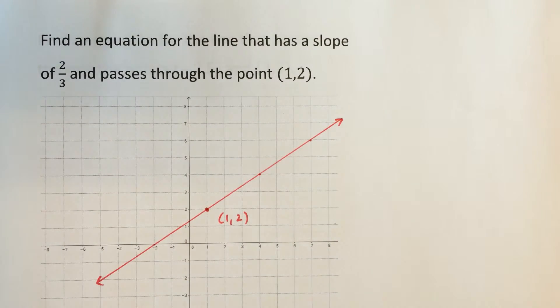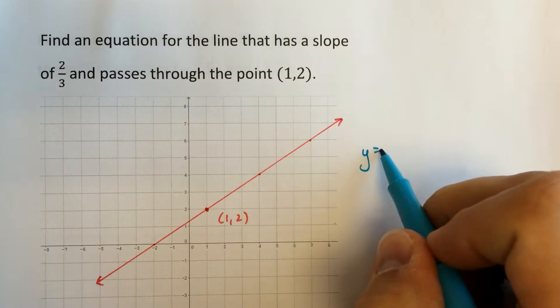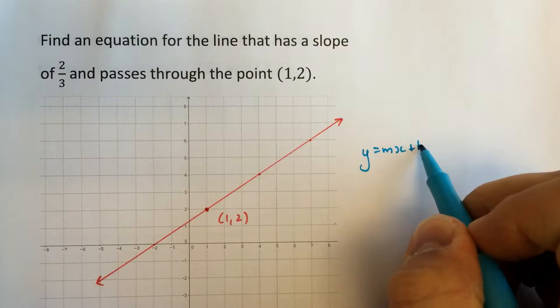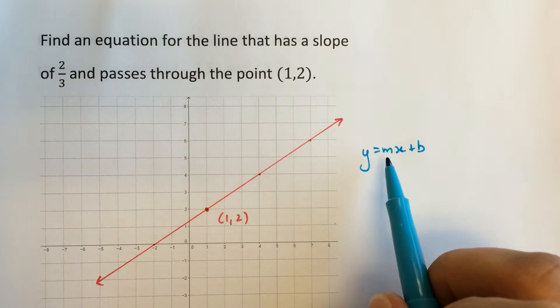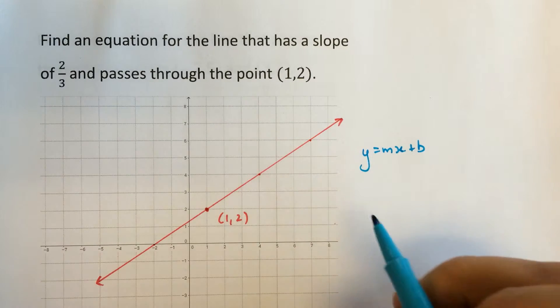So we have a general form of y equals mx plus b for an equation in slope y-intercept form. m is the slope, b is the y-intercept.